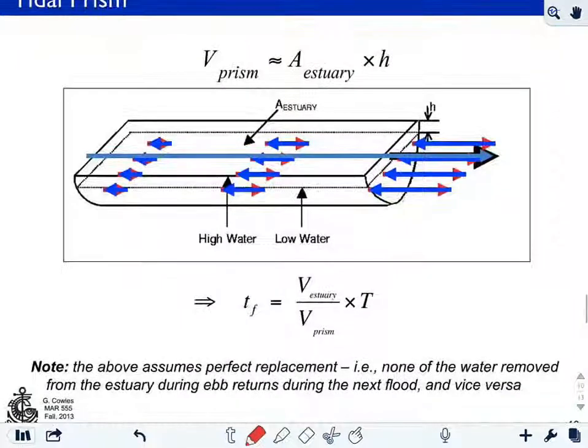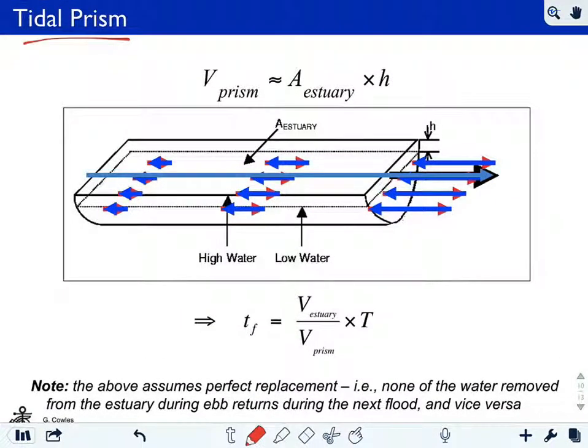So again, this tidal prism is a good thing to have in your formula because it's fairly easy to calculate. It's simply the area of the estuary here times the tidal range over a tidal cycle, so simply the difference between high water and low water.